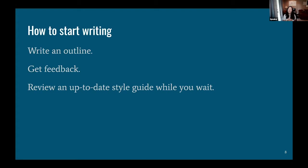Start with an outline — just a few bullet points guiding you for writing the larger article. Share it with a trusted friend, colleague, or an editor if you already know where you'd like to publish. While you're waiting for feedback, check out an up-to-date style guide, which will serve you as you start to write the full article draft. I have an AP style cheat sheet in my GitHub repo, plus opensource.com has a style guide on our website, and Red Hat has a style guide based on the IBM style guide.